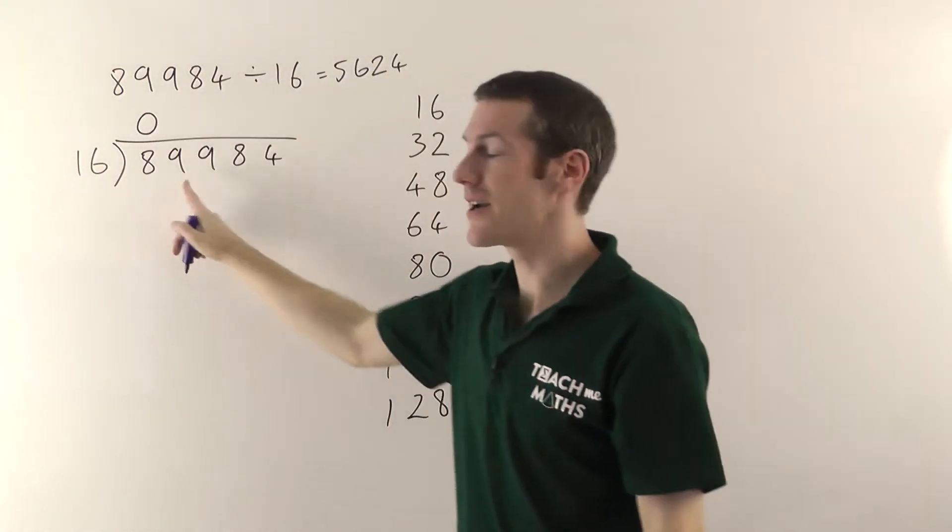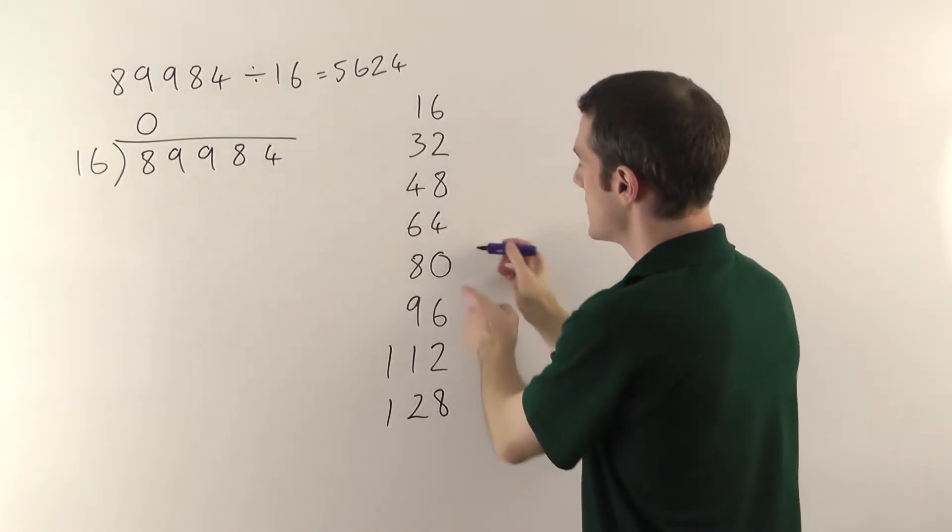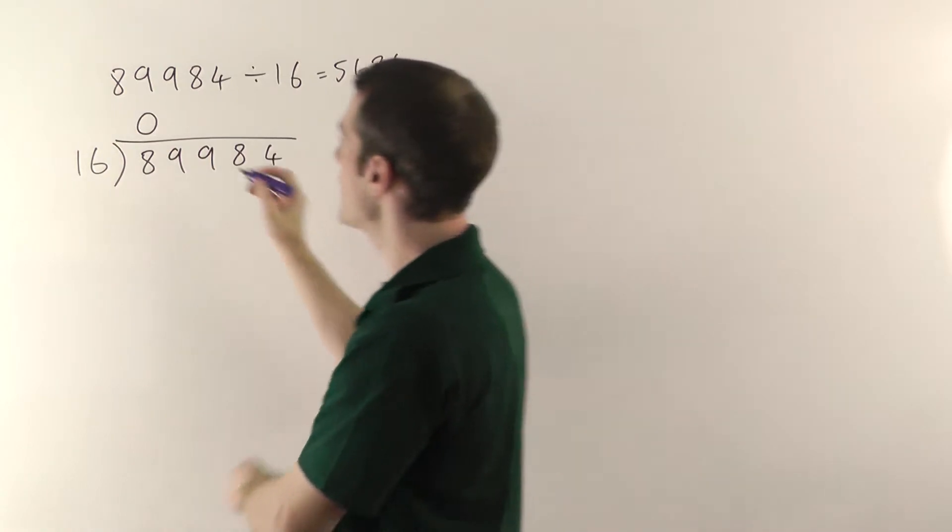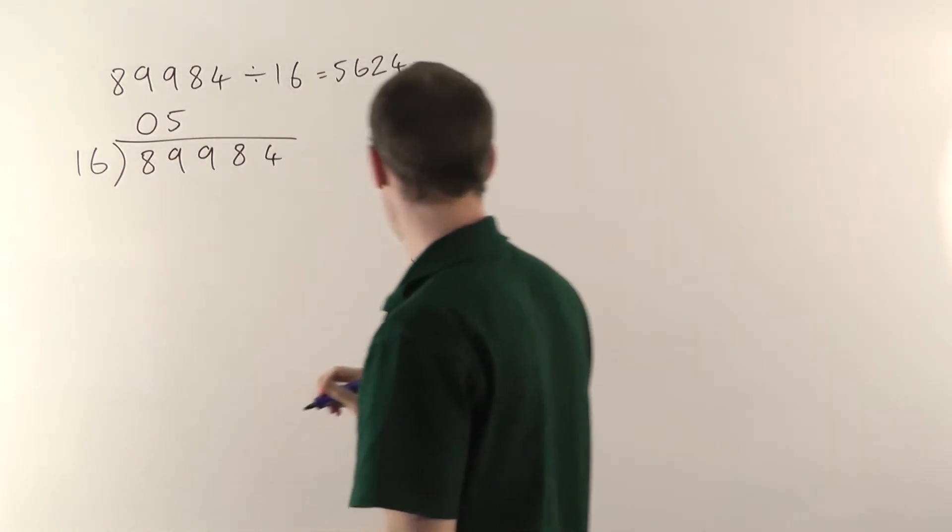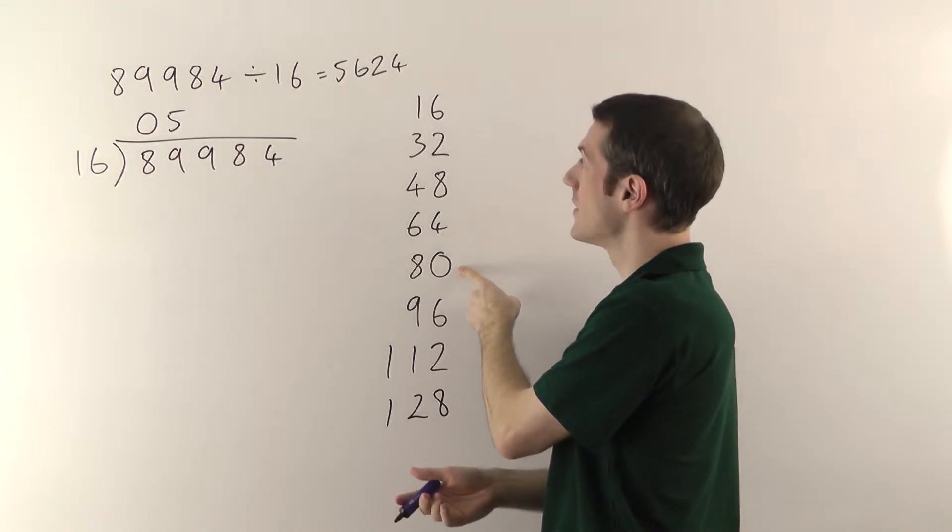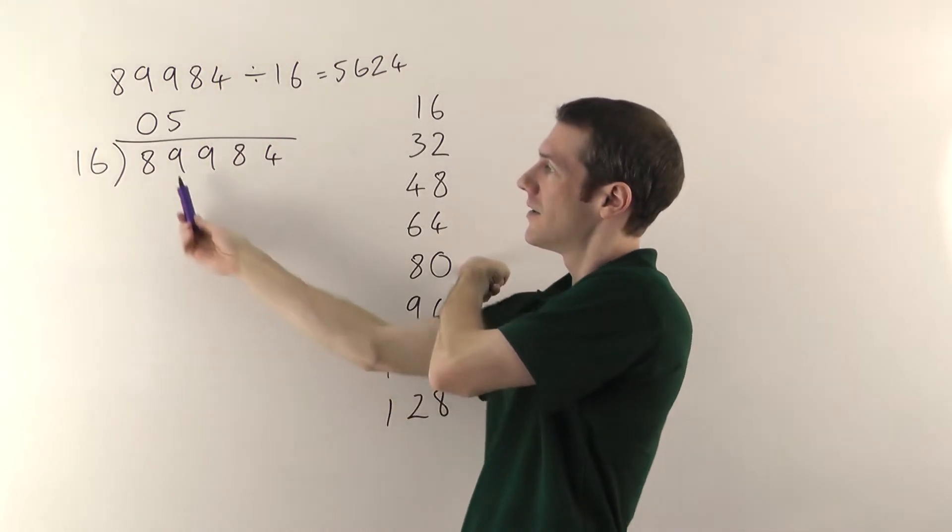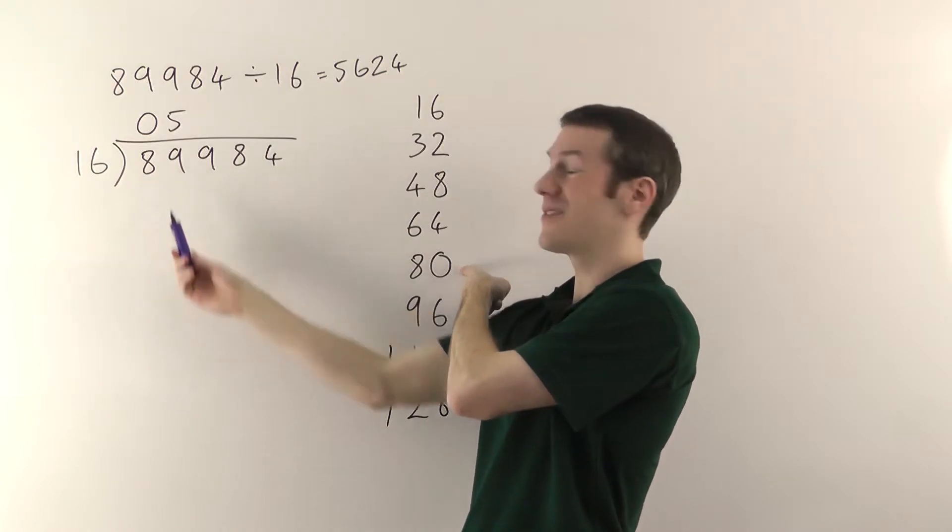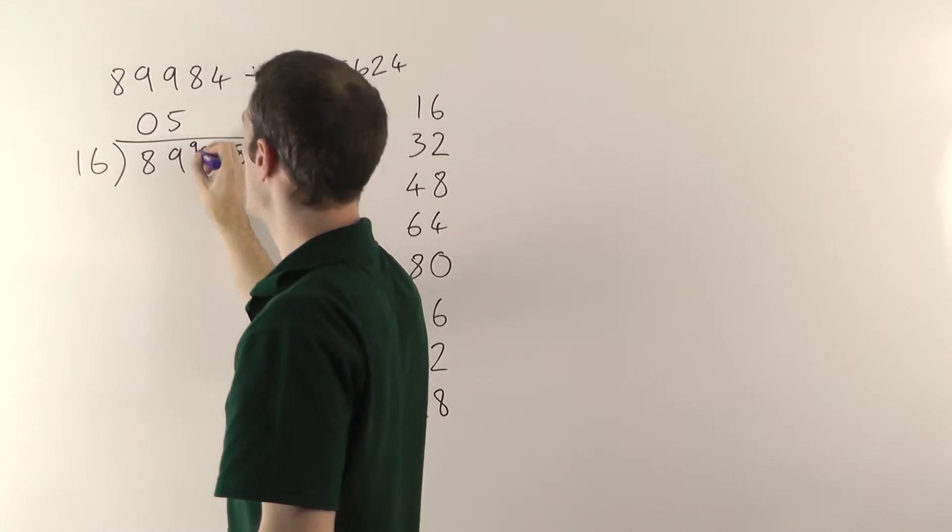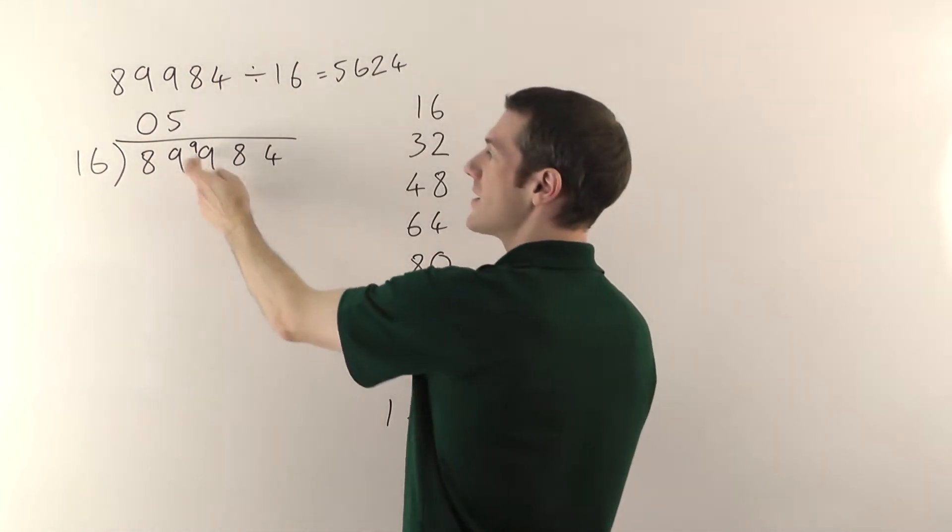So you say sixteen into eighty-nine. Sixteen into eighty-nine goes five times. So you write the five above there. But then you just work out the remainder like you would do for short division. Five sixteens are eighty, we're going up to eighty-nine, so the difference is nine. So just write that remainder on the next column. That turns the nine into ninety-nine.